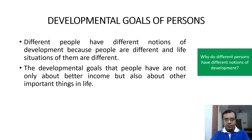The first important question that we can expect from this chapter deals with the development goals of persons: why do different persons have different notions of development? Different people have different notions of development because people are different and their life situations are entirely different. The development goals that people have are not only about better income but also about the important things in life.